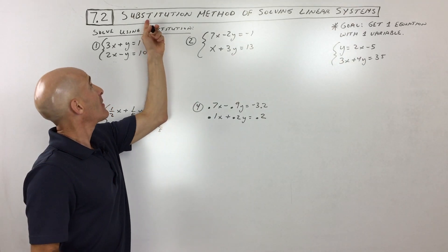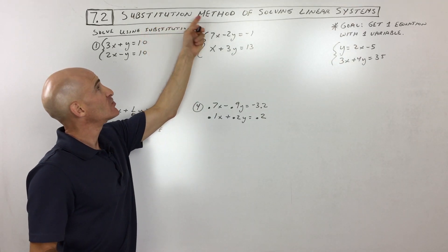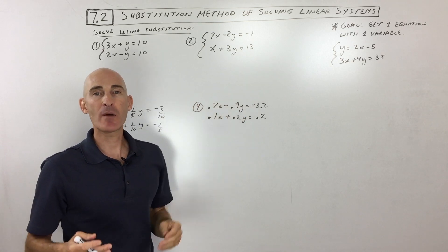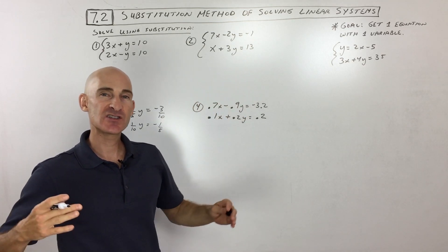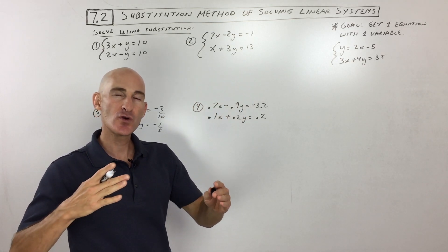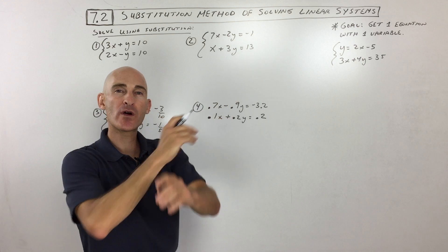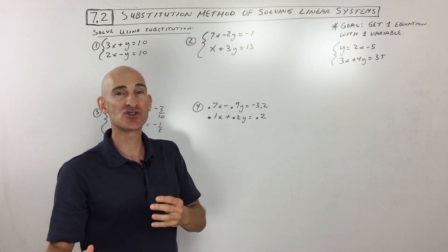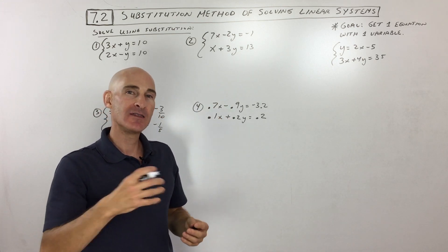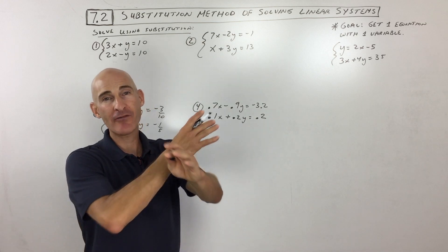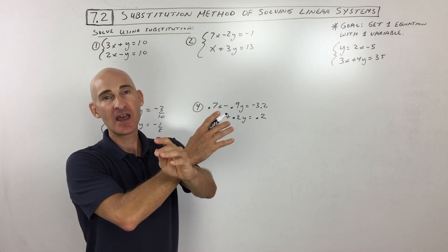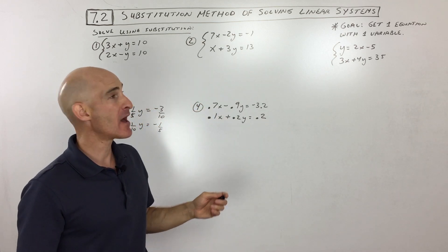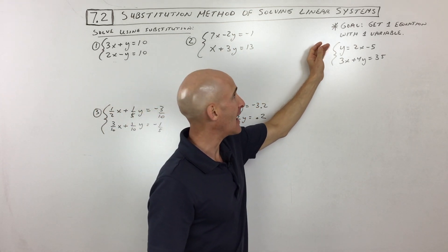We're going to talk about substitution method of solving linear systems. Remember, linear means line, system means we have two or more lines, and we're trying to find where they cross or intersect — the point that makes both equations true. In the last lesson, we talked about how to graph the two lines and see that common point of intersection. Here we're going to use an algebra method called the substitution method.